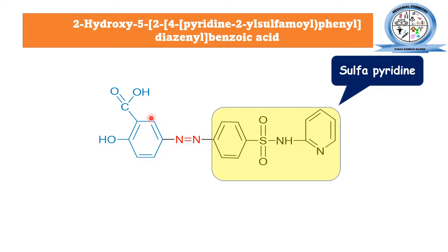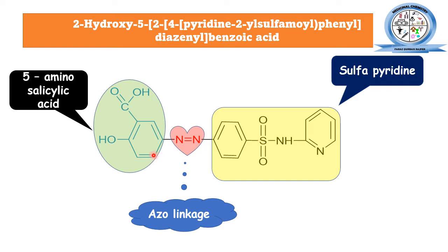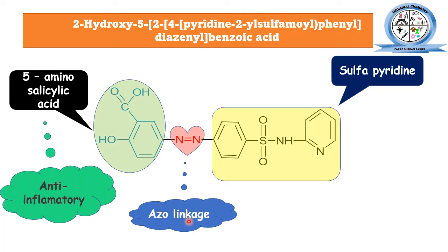This para-position amino is further substituted with amino salicylic acid — that is the 5-aminosalicylic acid. Salicylic acid is the structure where benzene has a carboxylic acid functional group and a hydroxyl functional group. When an amino group is present at the fifth position of the salicylic acid structure, it is termed 5-aminosalicylic acid. This 5-aminosalicylic acid is joined with the sulfapyridine by the azo linkage — a bond formed between two nitrogen atoms.